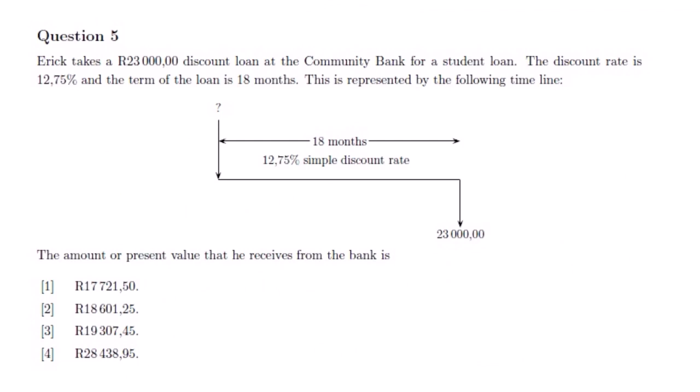This is the actual question, which is question 5. Without wasting time, let us jump straight to this question. Question 5 says: Eric takes a $23,000 discount loan at the community bank for a student loan. The discount rate is 12.75% and the term of the loan is 18 months. This is represented by the following timeline.